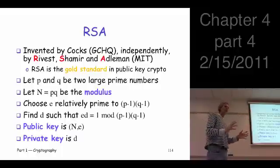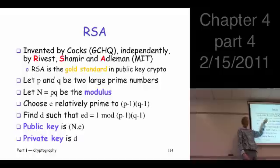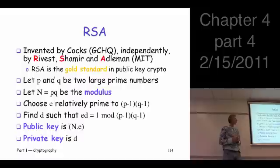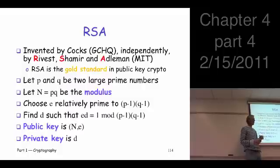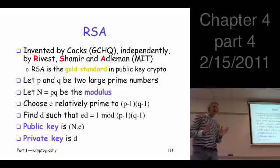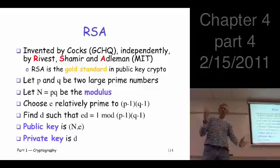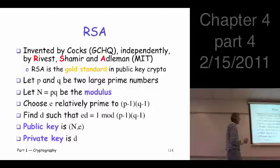To construct the public and private key pair for RSA: first, generate two large primes p and q, then form their product n, called the modulus. Next, choose a number e that is relatively prime to the product (p−1)(q−1). Finding such an e is computationally easy.